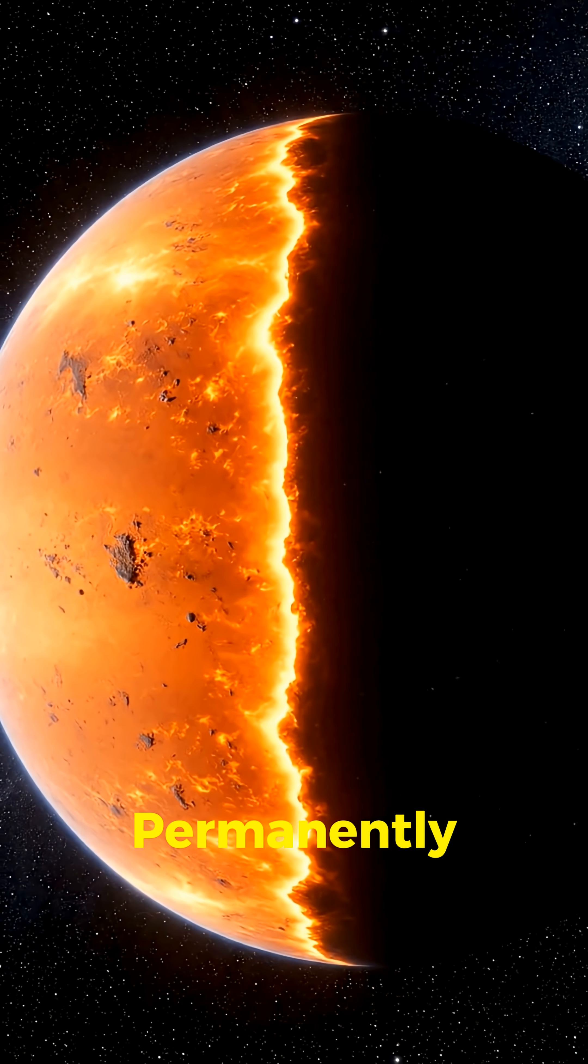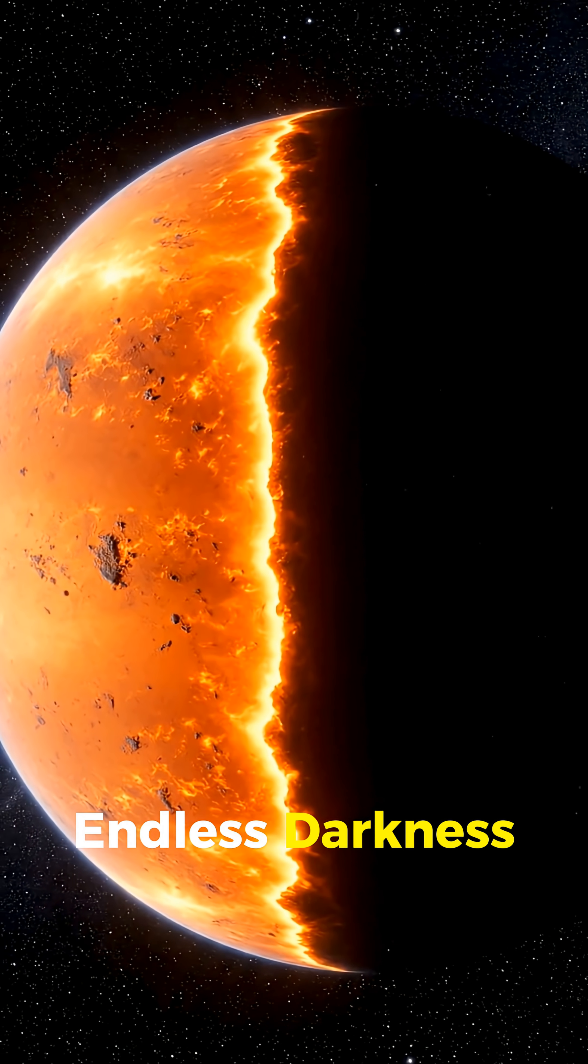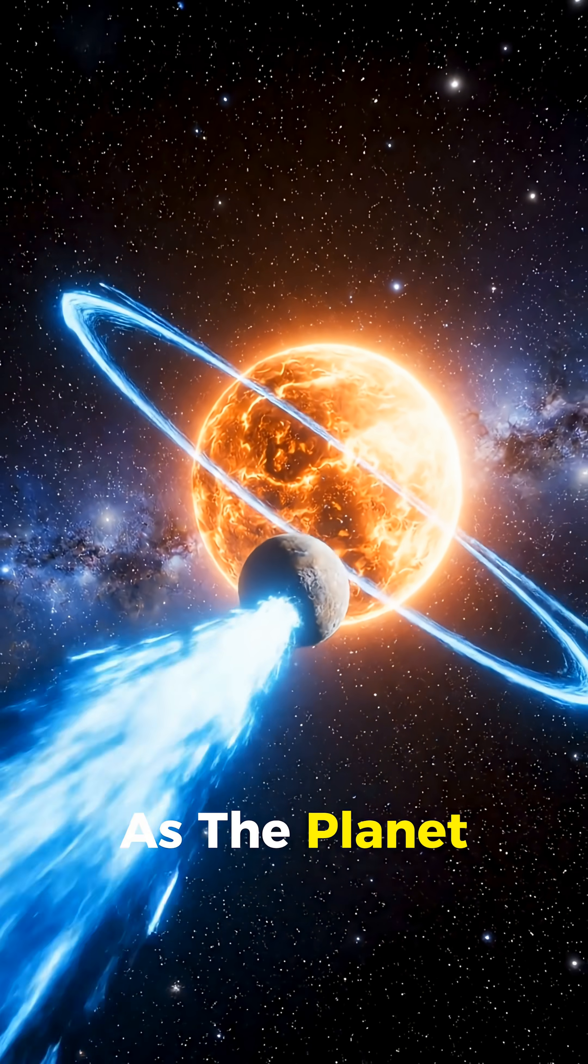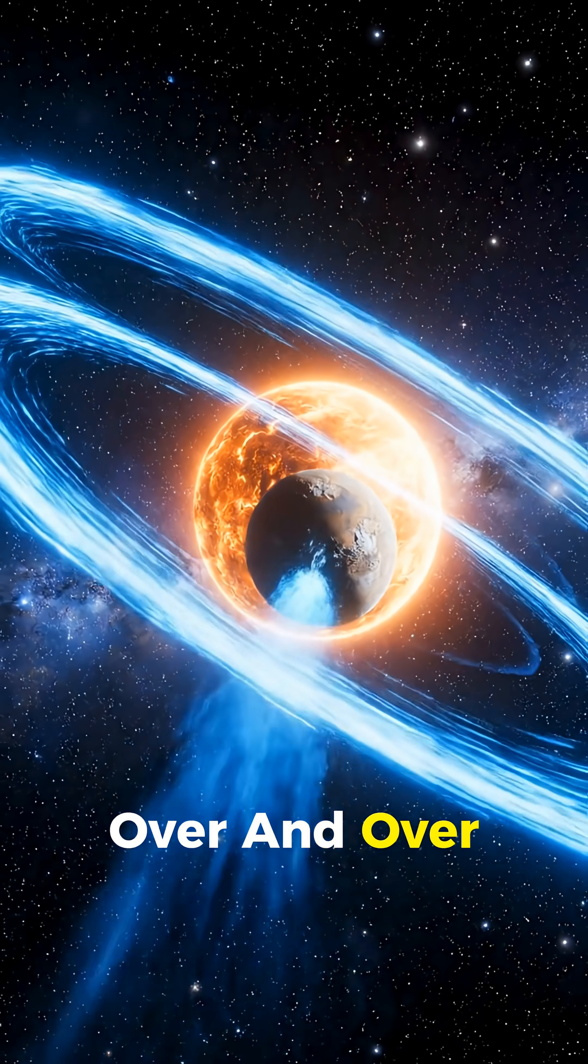roasting one side permanently while the other side sits in endless darkness, frozen in place as the planet loops its orbit over and over again.